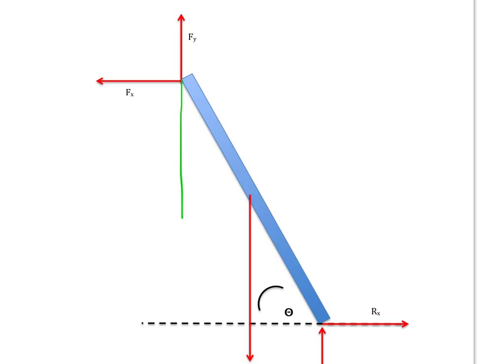Here is the line of action for Fy. The lever arm, drawn in purple, goes from the axis of rotation out to the line of action. Notice that it makes a right angle. The lever arm is always drawn from the axis of rotation out to the line of action at right angles.